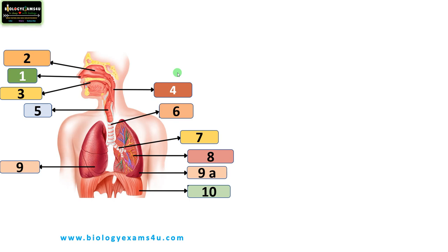In this video, let us understand respiratory system structure and function within 5 to 10 minutes. A respiratory system is a network of organs and tissues that helps in breathing or exchange of oxygen and carbon dioxide. Breathing involves two processes: inhalation or intake of oxygen to the inside, and exhalation where carbon dioxide is expelled out of the system.